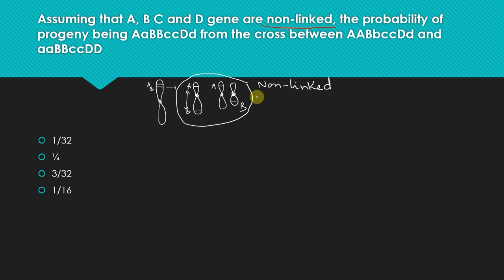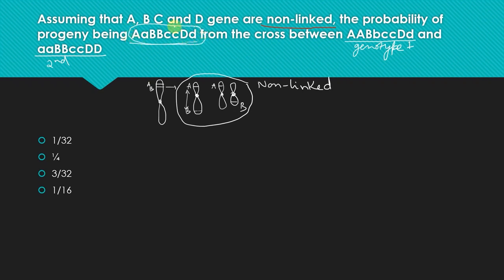So now coming back to the question: assuming that A, B, C, D genes are non-linked, what is the probability of the progeny being capital A capital A, capital B small B, small C small C, capital D small D, from the cross between these two parents? The question asks for the probability of the progeny getting this particular genotype. The options are: 1/32, 1/4, 3/32, or 1/16.